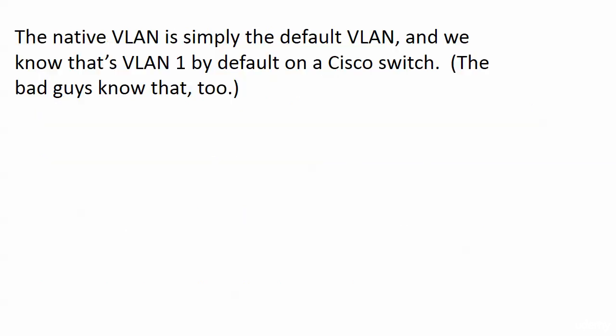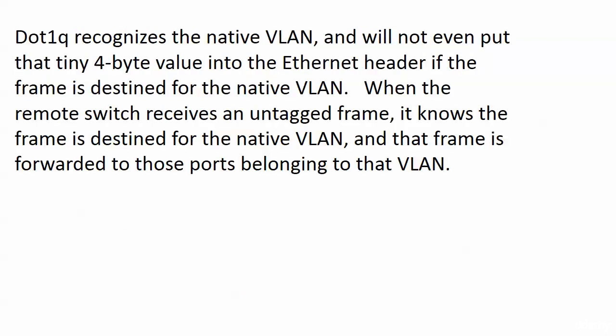What is the native VLAN concept? It's very simple — it's just the default VLAN. Native VLAN is just another way to say default VLAN. The native VLAN by default on a Cisco switch is VLAN 1, and that's going to be backed up by a couple of show commands we run on the switches shortly. The thing is, the bad guys know that too, and that information can actually be used against us — something we'll get back to when we talk about securing our switches later on.